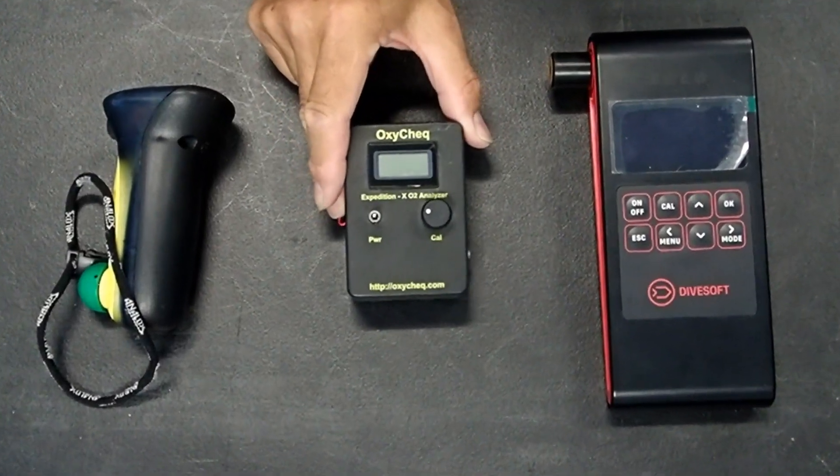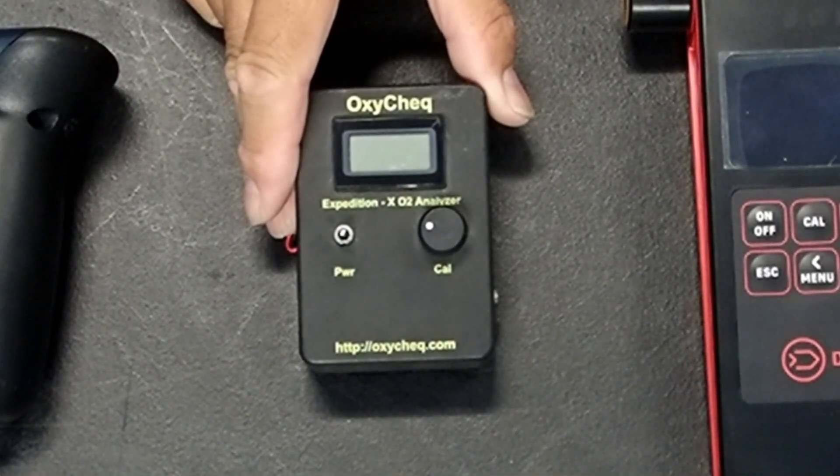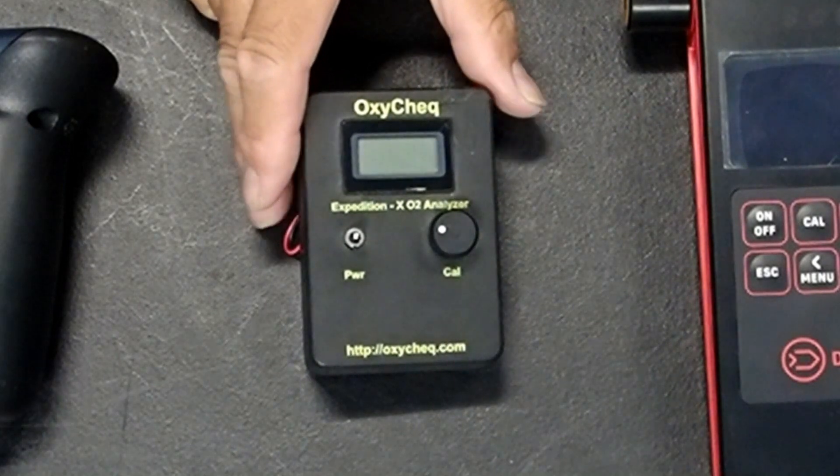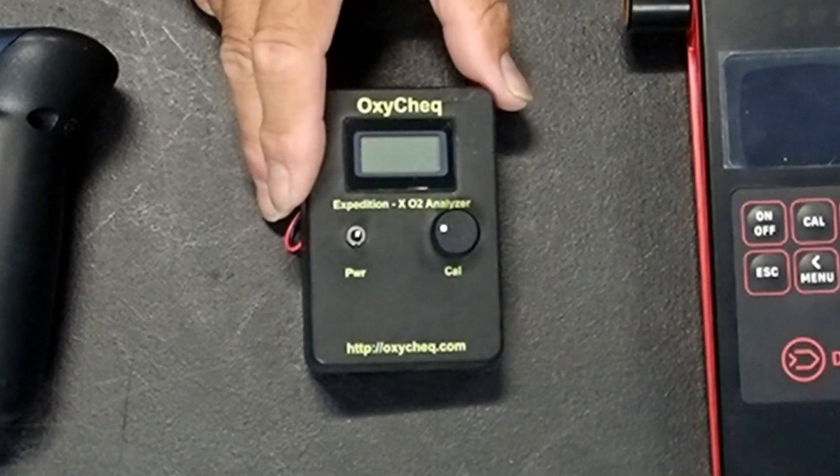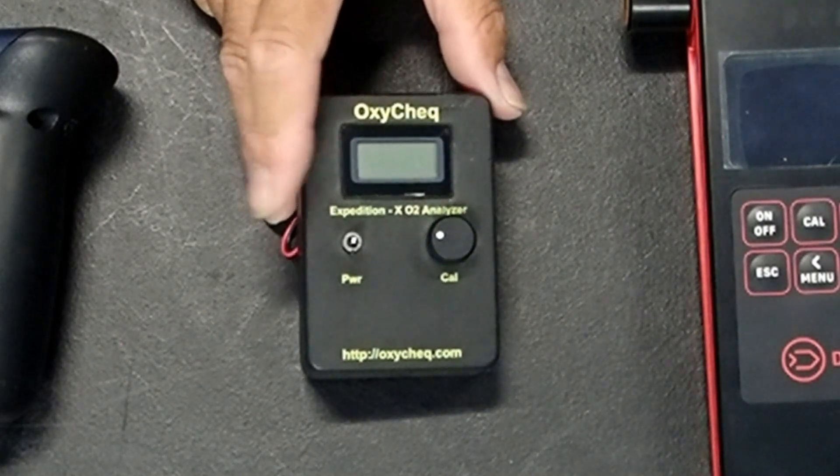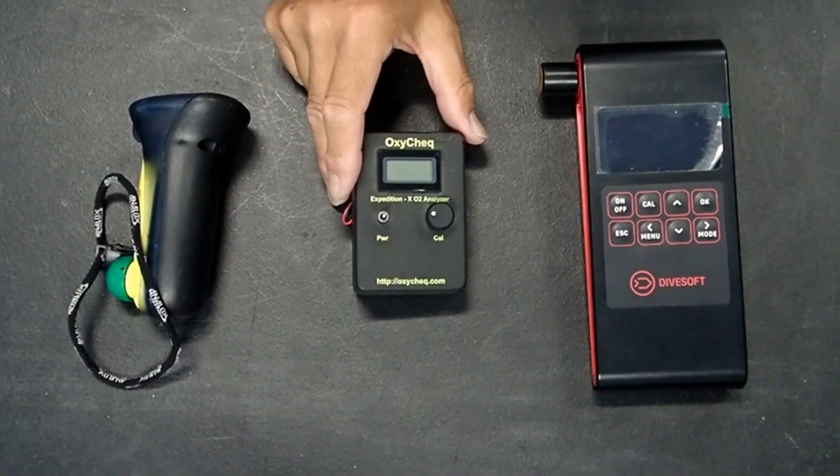This one is actually mounted on our continuous nitrox blending mixer. It's normally mounted on the wall and we use this to monitor the blend going into the compressor so that we end up with the blend that we want on the outside.